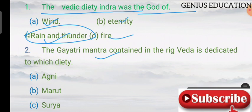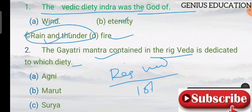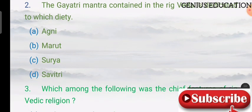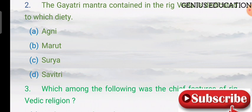Second question: the Gayatri Mantra contained in the Rig Veda is dedicated to which deity? The Gayatri Mantra is in the Rig Veda. The options are Agni, Maruta, Surya, and Savitri. The answer is D — Savitri.